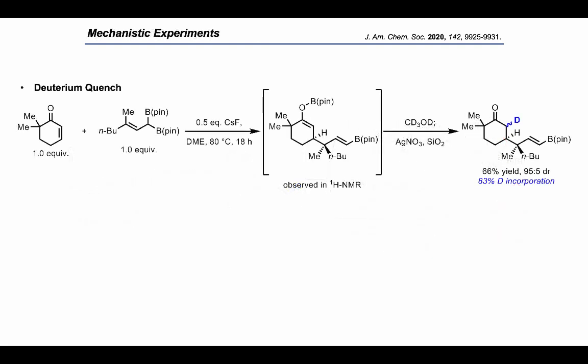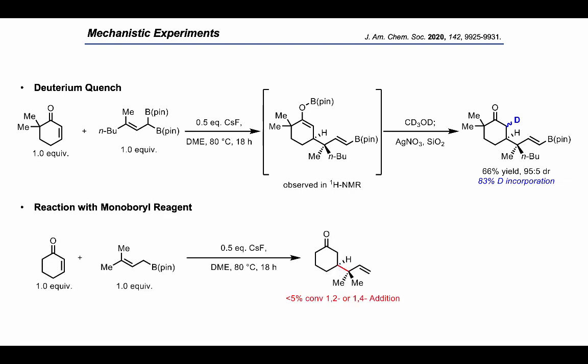Circling back to our initial proposed strategy, we were interested in figuring out just how this reaction proceeded. We were able to observe a boron enolate intermediate in the reaction via NMR spectroscopy, and upon quenching the intermediate with deuterated methanol, significant deuterium incorporation was observed. This data suggested the presence of an enolate intermediate. We also performed the reaction with a monoboryl species and found that under the standard reaction conditions, there was no conversion to product. This interesting result led us to believe that the presence of the second boronate ester is critical for activity, and is perhaps important for selectivity, though that is yet to be seen.